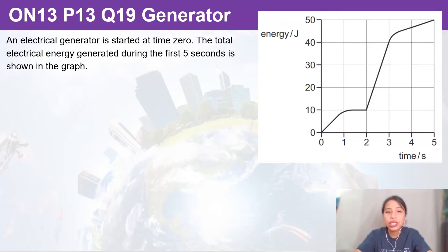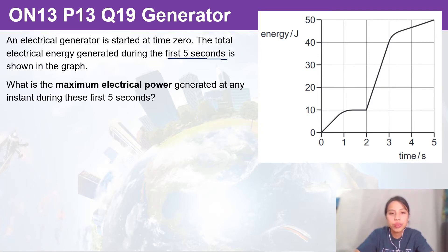The graph on the right shows the energy changes in time for an electrical generator. The electrical energy generated during the first five seconds is shown. What is the maximum power generated at any instant?